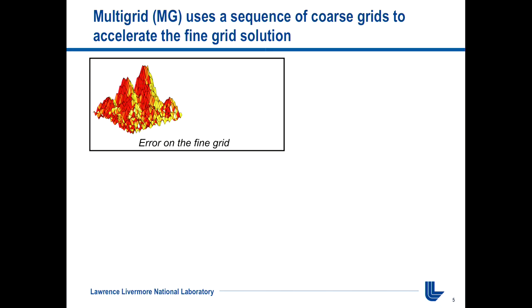They're not black box methods though. They often apply to smaller classes of problems because they take into account additional things about the underlying physics or the underlying nature of the problem — and this is how they achieve O(N) to begin with. Here's a cartoon that will run you through what a multi-grid method is and what the main components are.